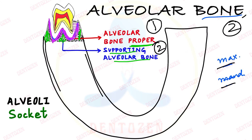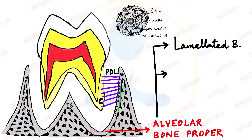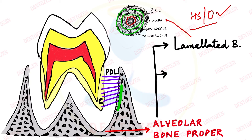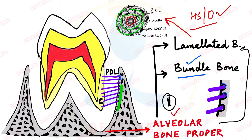Alveolar bone proper is further of two parts. First is lamellated bone — the word lamellated comes from layer. This part is arranged in layers around a central canal called the Haversian canal, which has blood vessels. This arrangement is known as Haversian systems or osteons. The second part provides attachment for the bundles of principal fibers of the PDL, which is why it is called bundle bone.